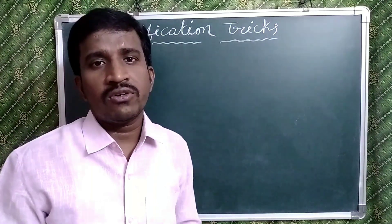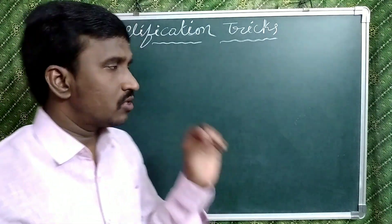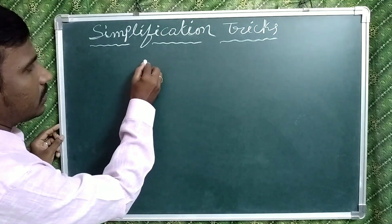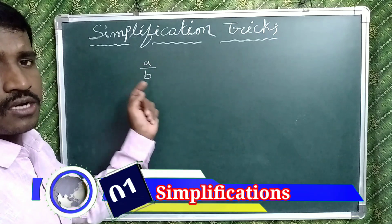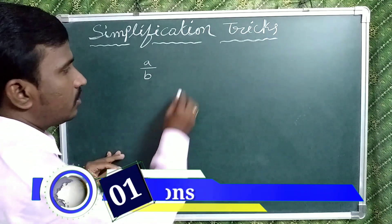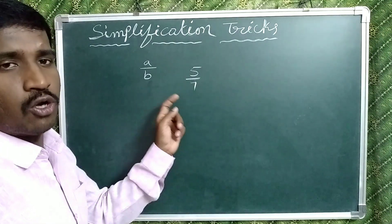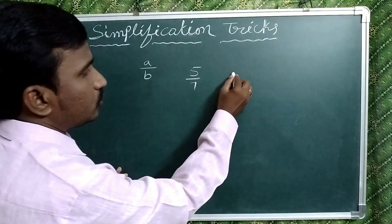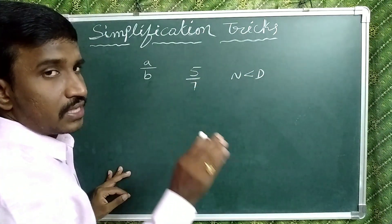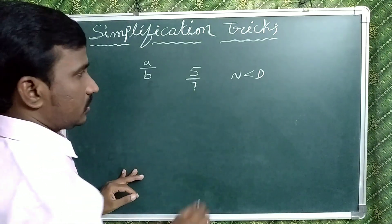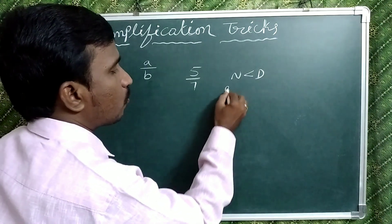Before going to discuss about a shortcut, let's discuss about some fundamentals in fractions. Suppose any number is in the form of a by b — that is a fraction. Here a is called the numerator and b is called the denominator. For example, 5 by 7: 5 is the numerator and 7 is the denominator. If the numerator is less than the denominator, like 5 by 7, that fraction is called a proper fraction.